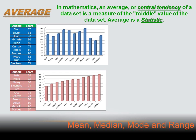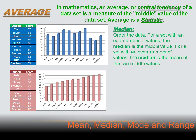Another way to find central tendency is the median. To get a median, you order the data. For a set with an odd number of values, the median is the middle value — the one right in the middle. For a set with an even number of values, the median is the mean of the two middle values. For example, with the data set 1, 2, 2, 3, 4, the median is the 2 in the middle — it has 2 data points to the left and 2 data points to the right.